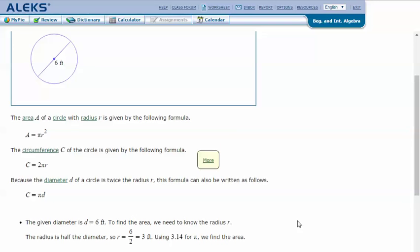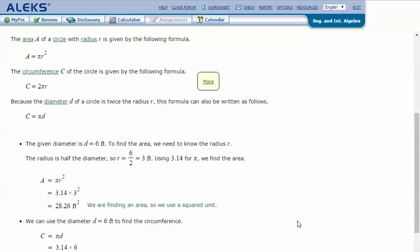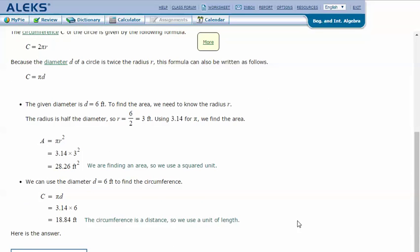The given diameter d = 6 feet. To find the area we need to know the radius. The radius is half of the diameter, so the radius is 6 divided by 2, which is 3 feet.